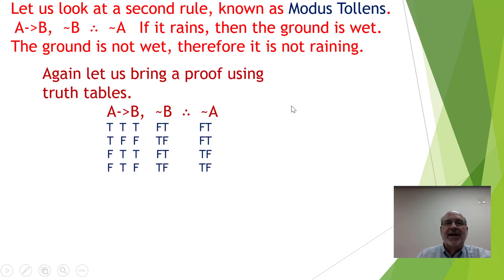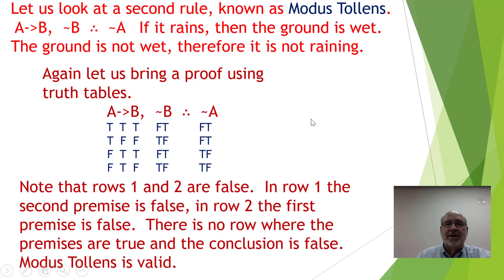Using a truth table, notice that in row one the conclusion is false but the second premise is false, and in row two the first premise is false. Therefore there is no row at all where the premises are true and the conclusion is false — modus tollens is a valid argument.